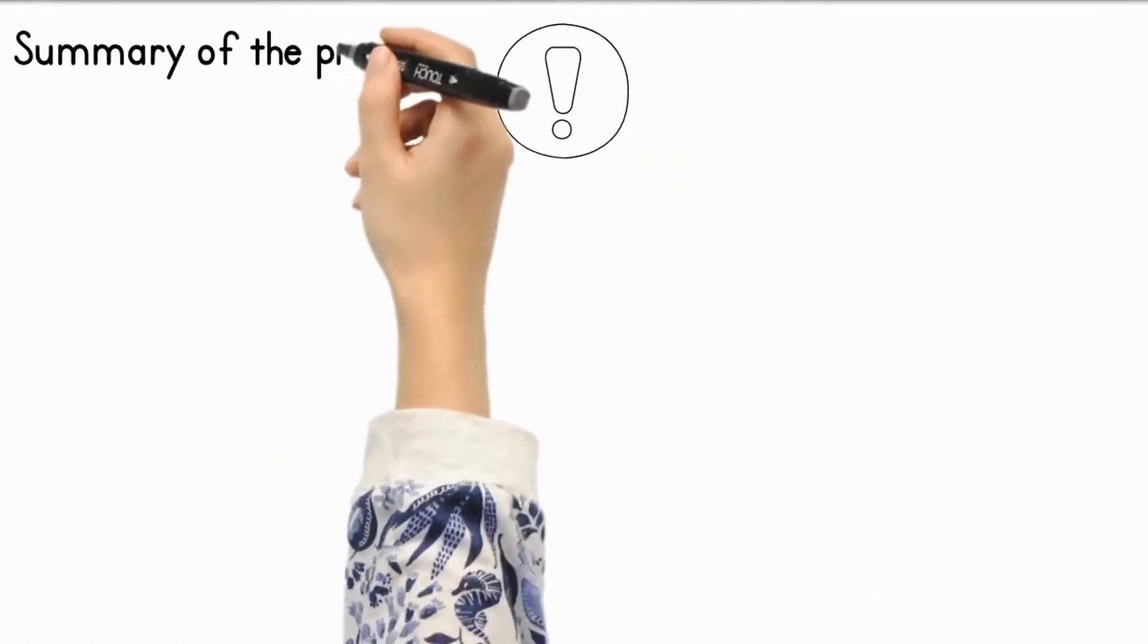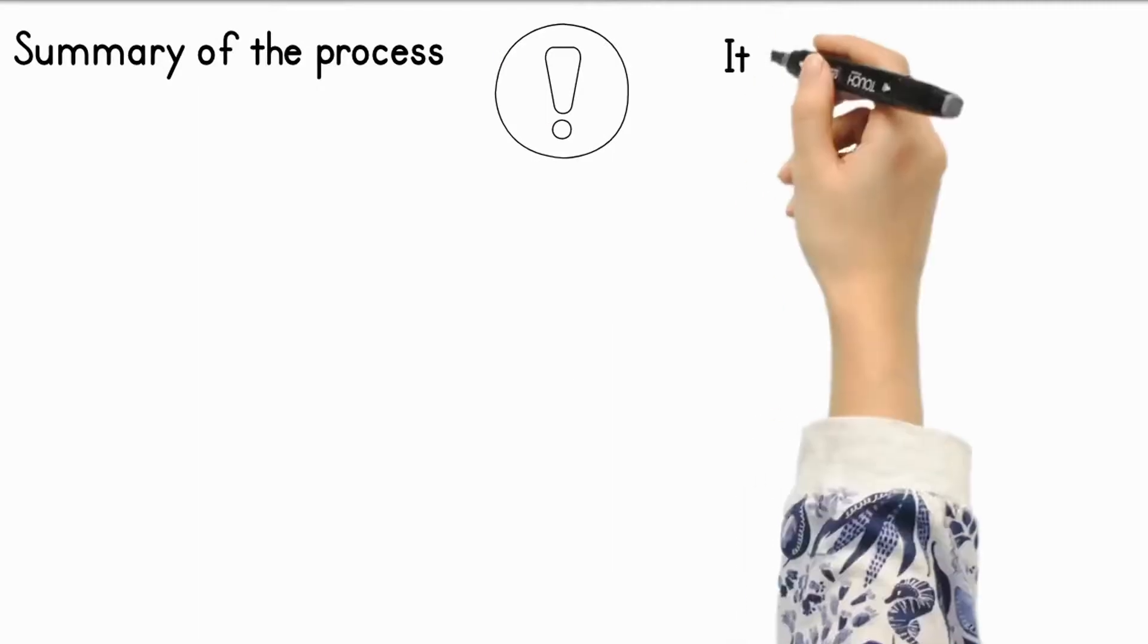It is important to realize that this equation is only a summary of the process. It actually takes place gradually as a sequence of small steps which release the energy of the glucose in small amounts.